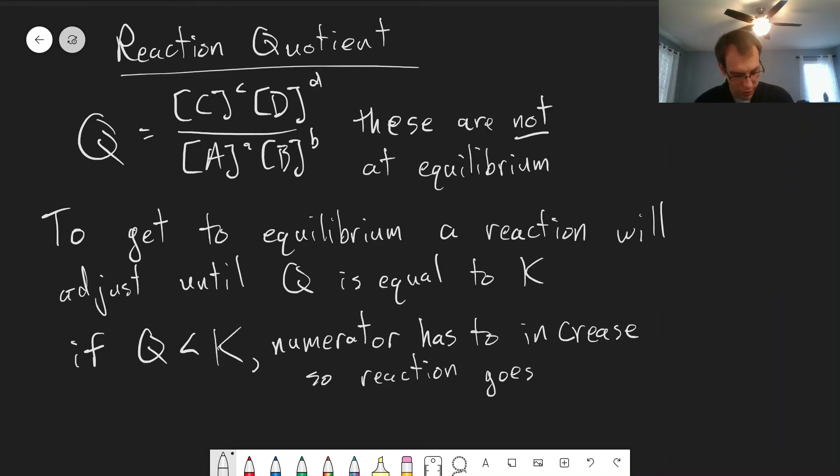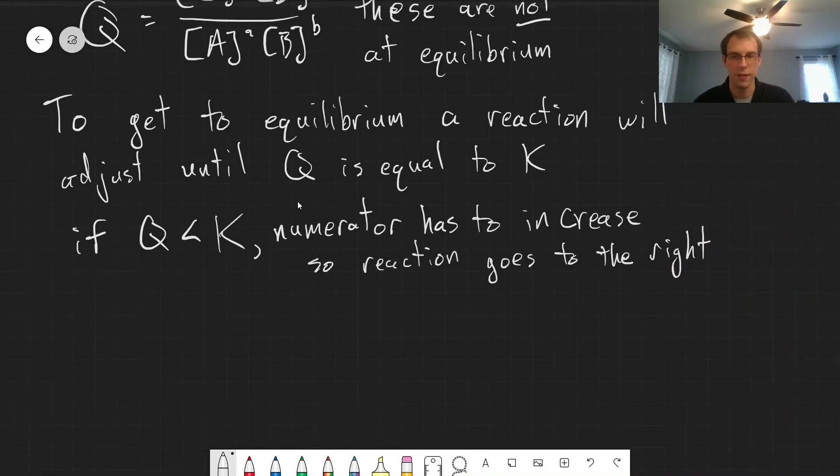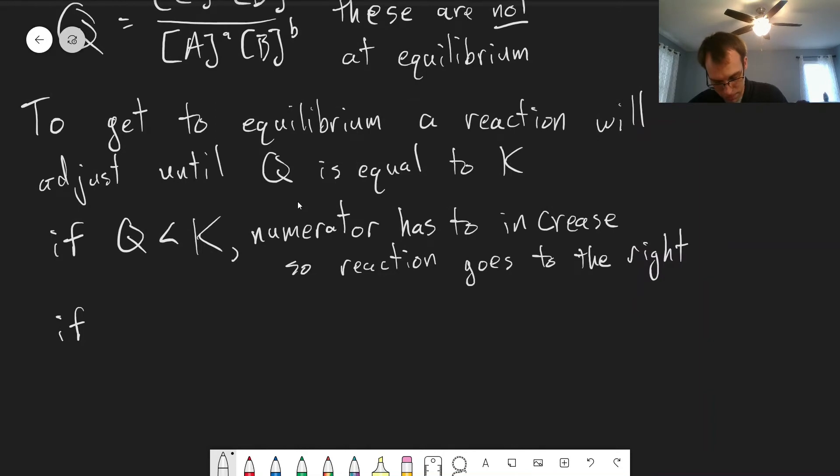Which means our reaction will proceed to the right. Our products will be produced, our reactants will be used up. If we have the opposite, if Q is bigger than K, our numerator has to decrease, or we could say the denominator has to increase, so the reaction will go to the left instead.